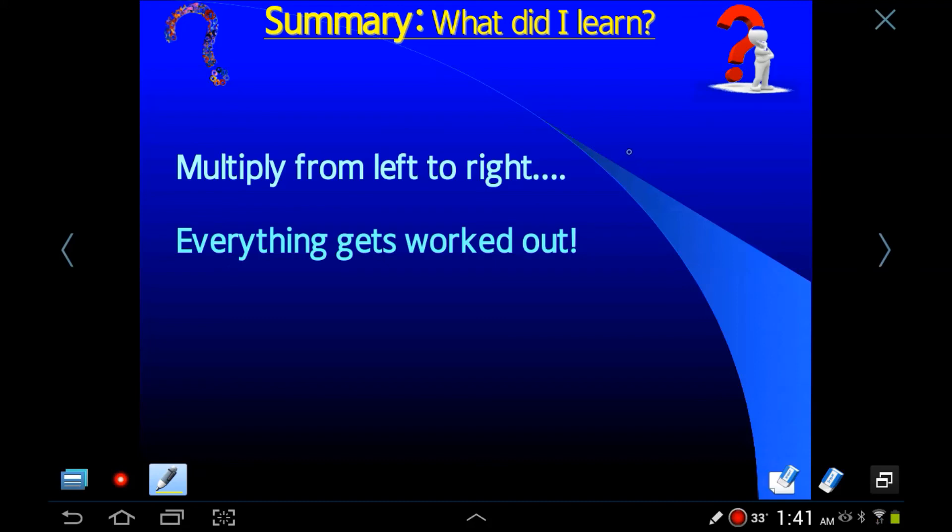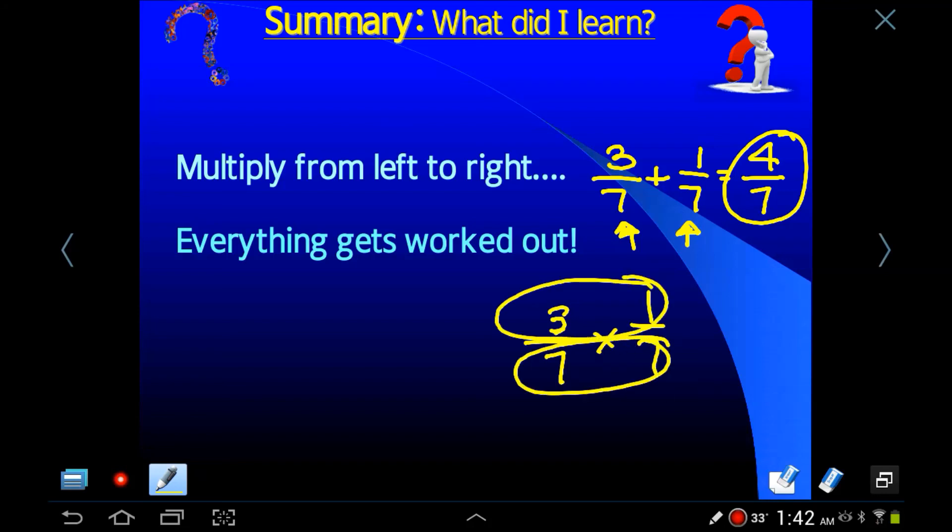You'll also remember that when we added fractions, and I don't want to talk about this too much because it might confuse you, but when you added fractions like 3/7 plus 1/7, you didn't touch the denominators, did you? That was a big point I made. Never add, never subtract denominators. Ever. But in this case, we didn't touch it. But if this was a multiplication problem, 3/7 times 1/7, yeah, everything gets touched. Everything gets worked out. 3 times 1 is 3. 7 times 7 is 49. And that's in lowest terms already. So everything gets worked out. No LCDs required at all.